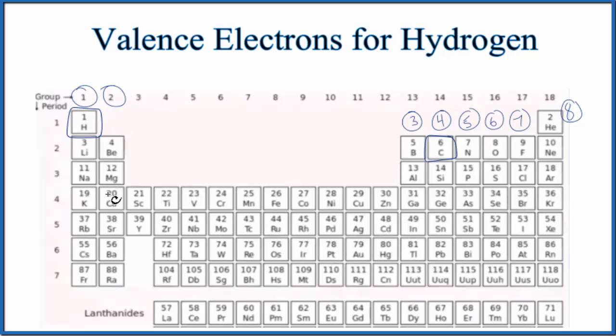If we had group 2, it would be two valence electrons. We skip the transition metals here, 3, 4, 5, 6, 7, and 8, with the exception of helium. That has two. So that's one way to figure out the number of valence electrons for hydrogen.